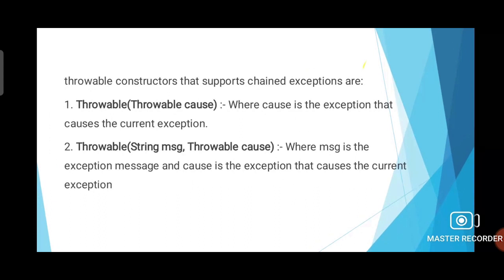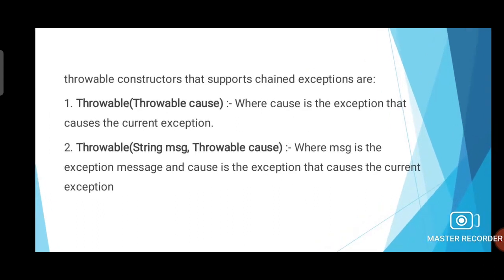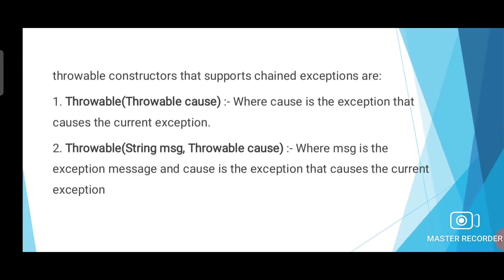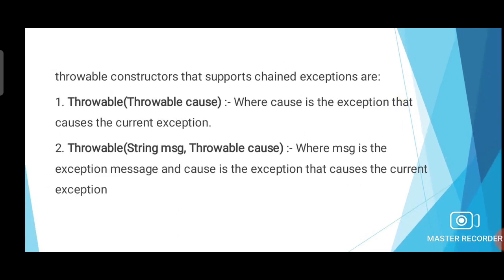To support chained exceptions, the constructors of the Throwable class are used. The Throwable class has two constructors with different parameters. The first constructor is Throwable(Throwable cause), where cause is the exception that causes the current exception. The second constructor is Throwable(String message, Throwable cause), where message is the exception message and cause is the exception that causes the current exception.